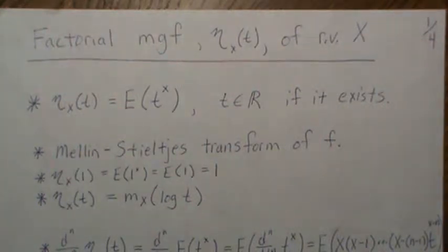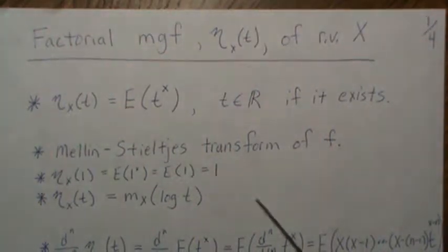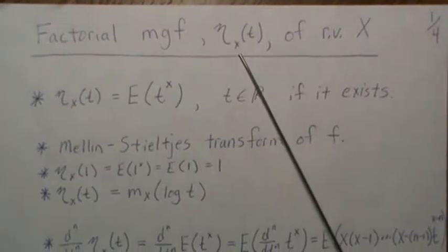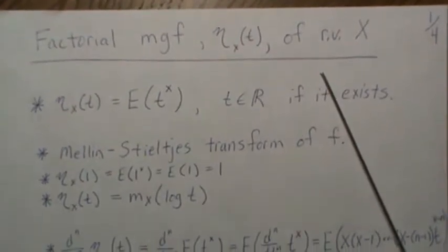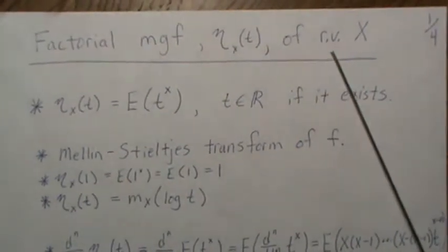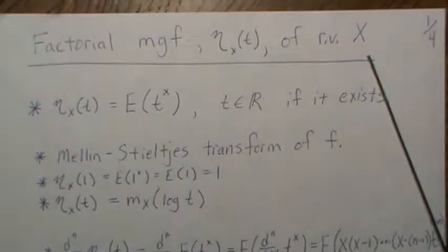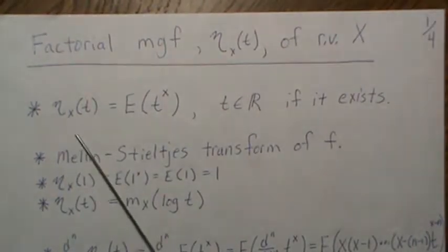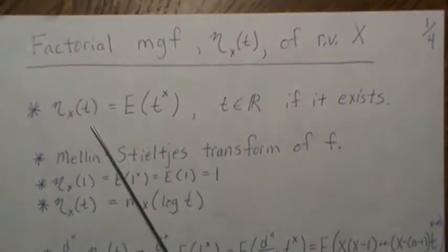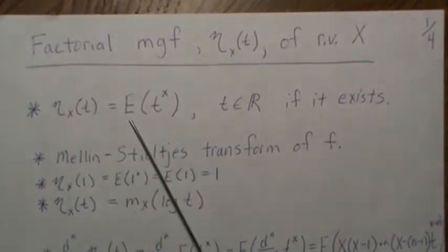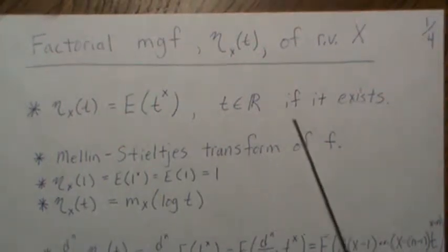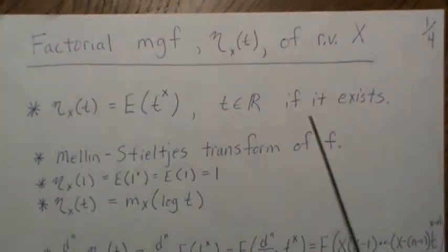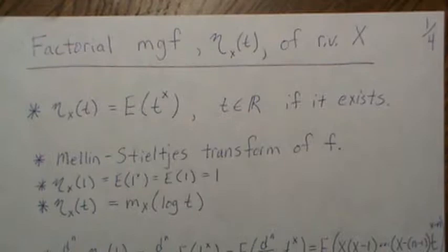Hello, this video is on the factorial moment generating function. We call it eta of x of t, and it's for a random variable or vector x. It's defined as eta of t equals the expected value of t to the x, where t is a real number, assuming that this exists.